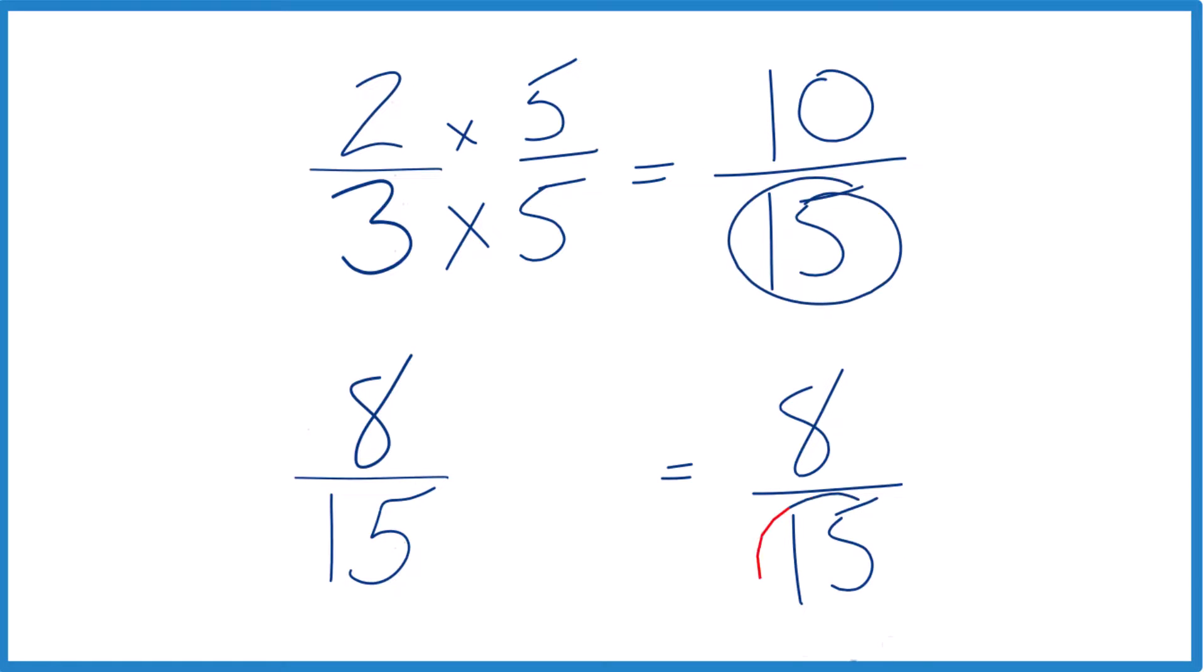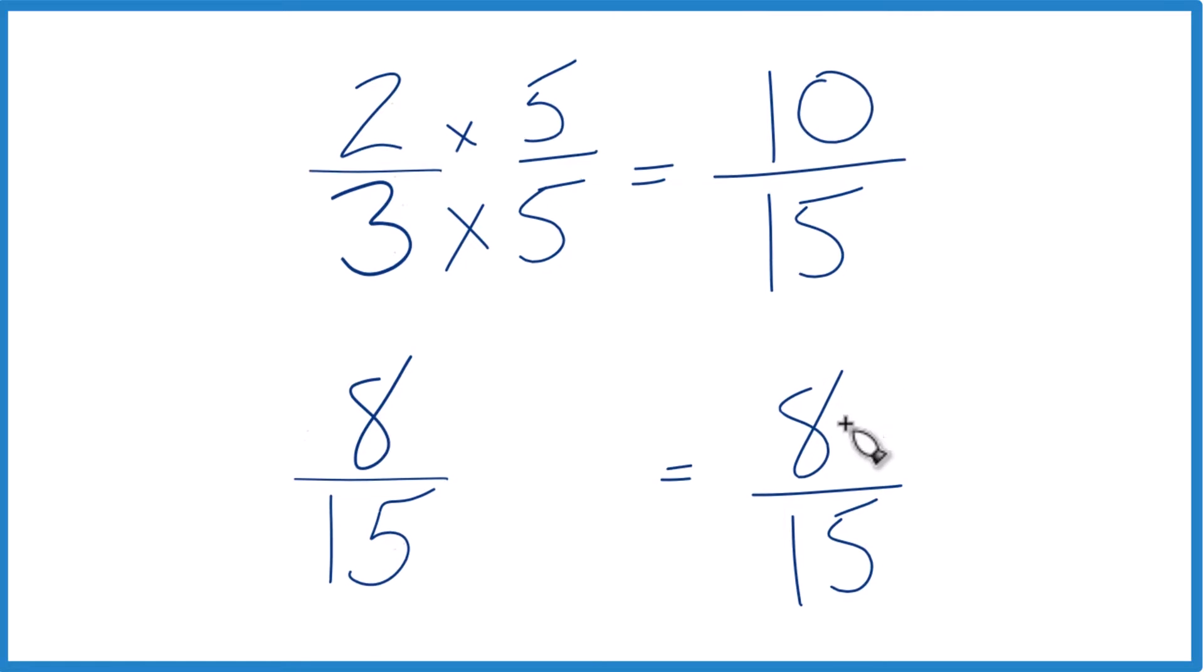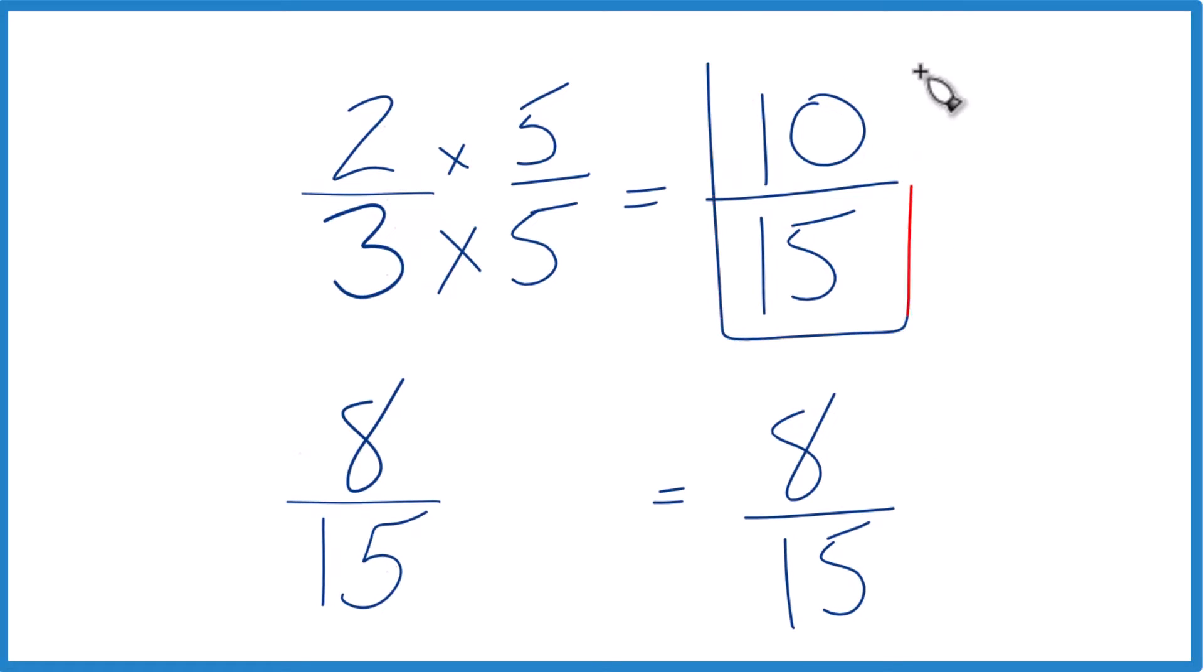Now we have the same denominator. We just compare the numerators. And you can see pretty clearly ten is larger than eight. So ten-fifteenths, that's larger than eight-fifteenths. And since these are equivalent, two-thirds, that's also larger than eight-fifteenths.